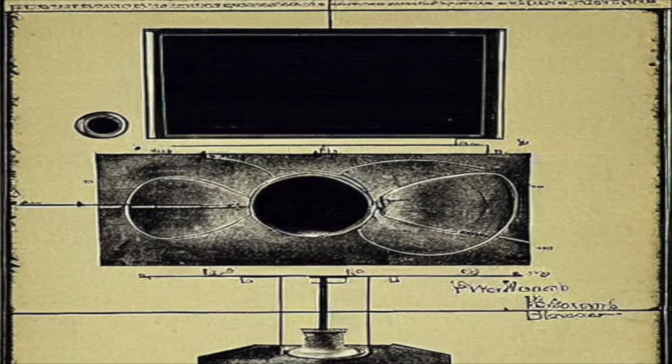The chronovisor, a machine purported to be capable of viewing events from the past and even glimpsing into the future, has sparked debate among scientists, historians, and conspiracy theorists alike.